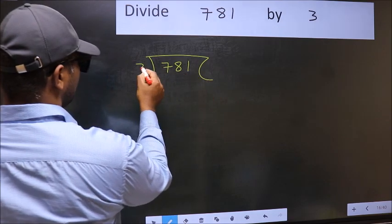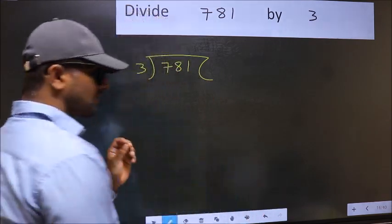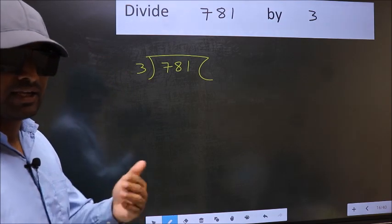781 and 3 here. This is your step 1. Next.